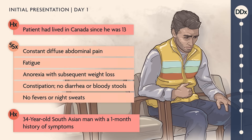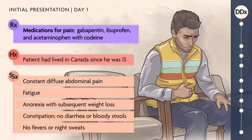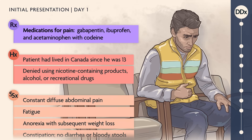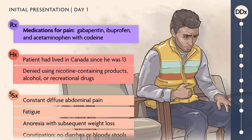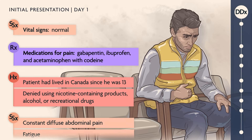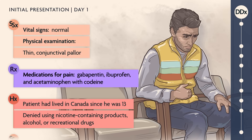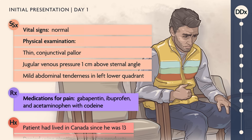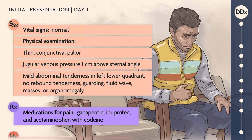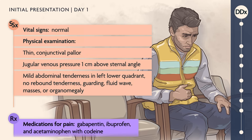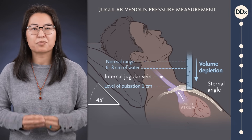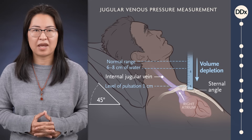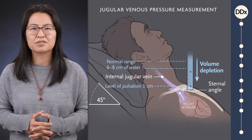The patient had lived in Canada since he was 13. His medications included gabapentin, ibuprofen, and acetaminophen with codeine, all prescribed for his pain. He denied using nicotine-containing products, alcohol, or recreational drugs. Vital signs were normal. On physical exam, he appeared thin with conjunctival pallor. Jugular venous pressure was 1 cm above the sternal angle. His abdominal exam showed mild tenderness in the left lower quadrant with no rebound tenderness, guarding, fluid wave, masses, or organomegaly. Bowel sounds were normal.